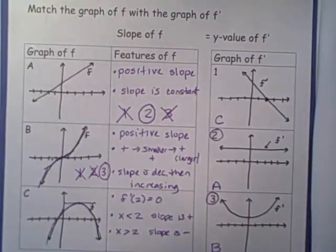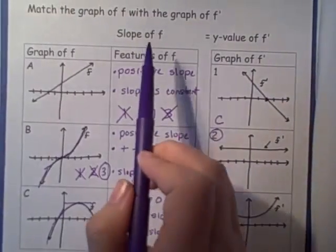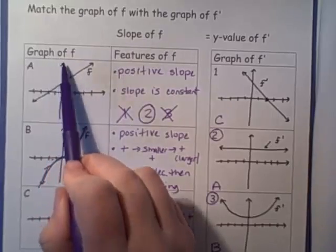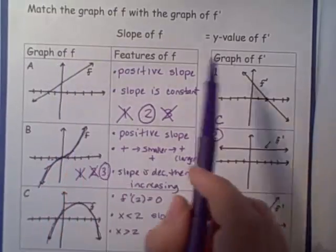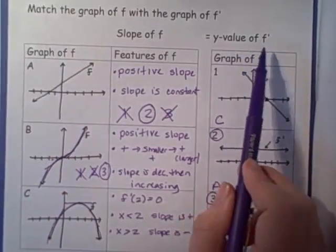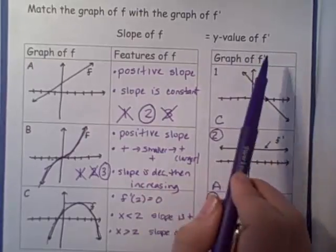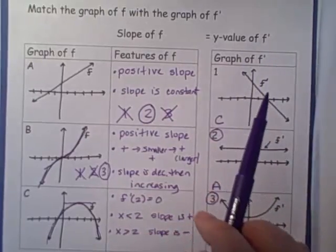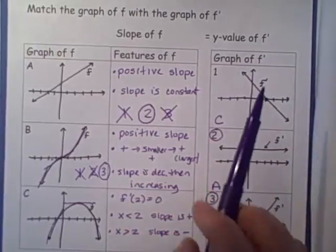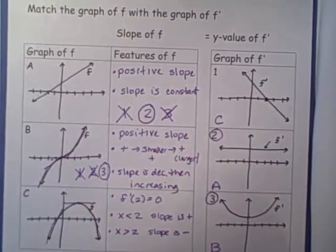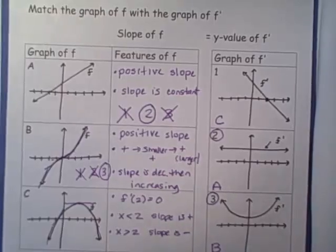The key here is to think of the slope of the graph of f as matching the y-value of the graph of f prime. These problems take a little practice to get the hang of, so keep at it and try several in your homework — there are more in your book and you'll get it.